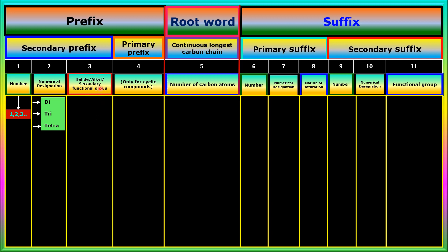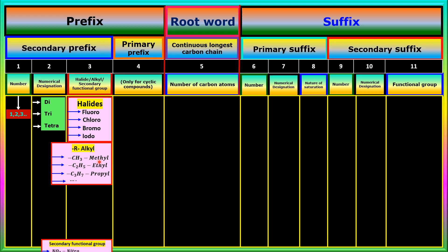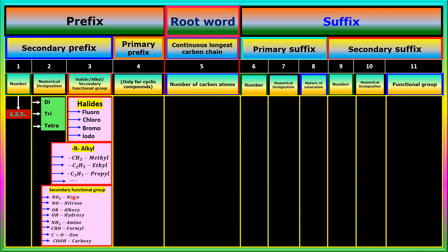The secondary prefix tells about the second-grade functional groups known as substituents — for example, halogens, alkyl groups, alkoxy groups. Halides: fluoro, chloro, bromo, iodo; alkyl groups: methyl, ethyl, propyl. When more than one functional group is used in a compound, only one functional group will be taken as the principal functional group and the remaining functional groups are considered as substituents. We discussed these things in our previous video about IUPAC naming of polyfunctional compounds.